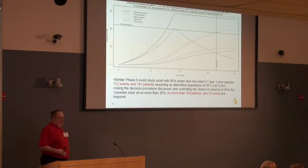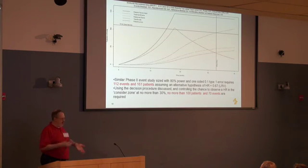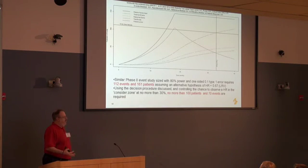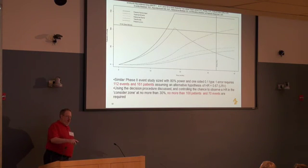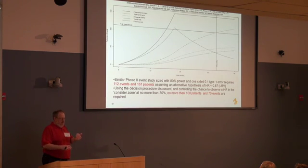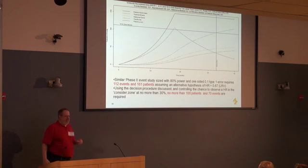One last thing on sample size. This is a diagram many of you may produce some variation of for an event trial that assumes the hazard ratio equals the lower reference value and powers the trial at 80% with two-sided 0.1 alpha. In that case, the trial requires 161 patients with 112 events. Comparing this to what we did using the Lalonde method, we now have a difference of 61 patients — it required only 100 patients with 70 events to reach a decent decision as laid out.